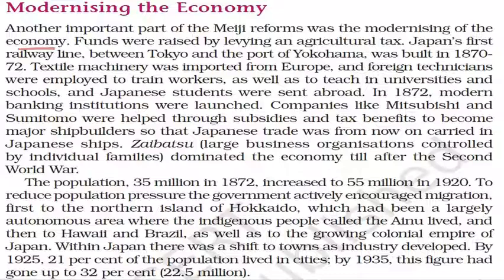Funds were raised by levying an agricultural tax. Japan's first railway line between Tokyo and the port of Yokohama was built in 1870–72. These are important to note for objective type questions. Textile machinery was imported from Europe and foreign technicians were employed to train workers, teach in universities and schools, and Japanese students were sent abroad. In 1872, modern banking institutions were launched in Japan.